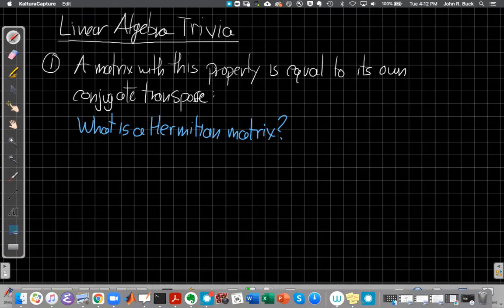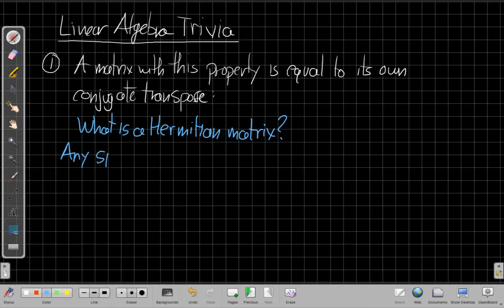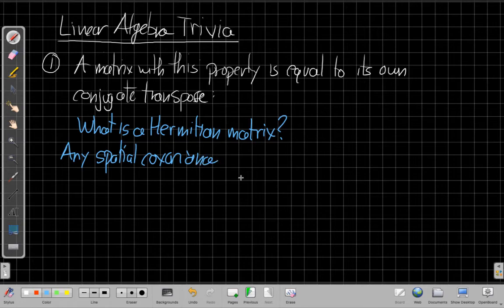The answer for this one is, what is a Hermitian matrix? We call a matrix Hermitian if when I take the conjugate and the transpose, I get the same thing back. This is true for all spatial covariance matrices. So any spatial covariance matrix is Hermitian. And that falls from the definition, that is the expected value of that outer product. You can work that through. So any spatial covariance matrix is Hermitian.